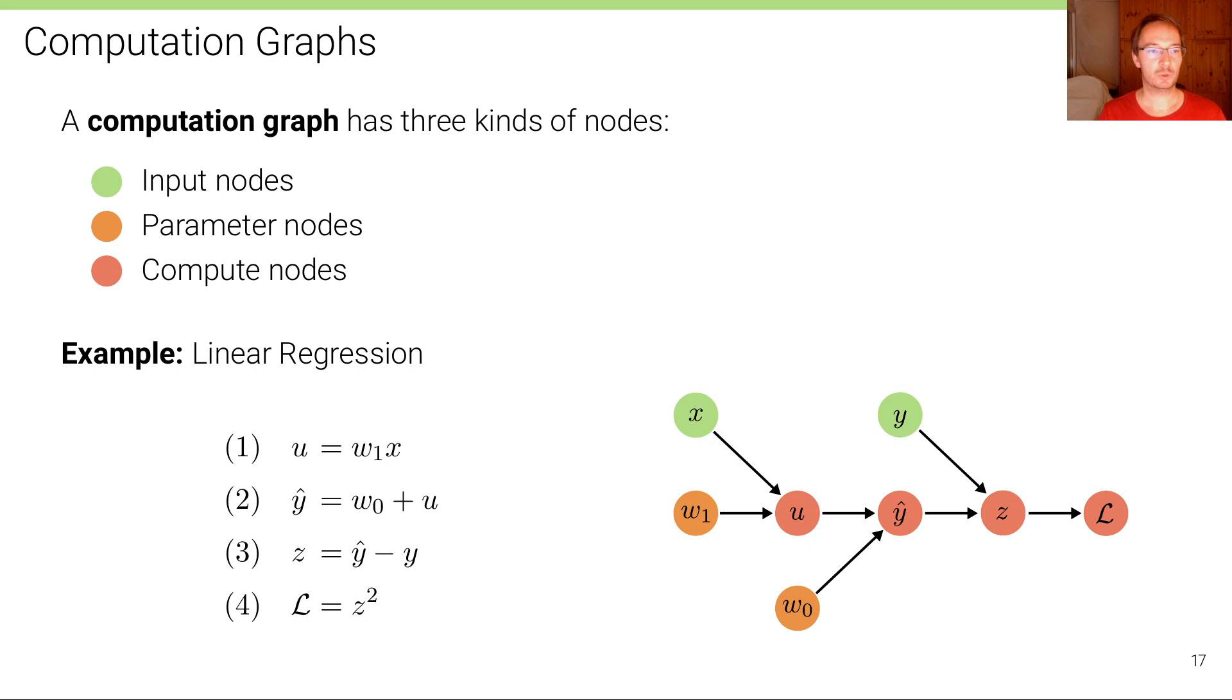Now let's look at what a computation graph is. A computation graph, as we will define it in this lecture, has three kinds of nodes: input nodes in green, parameter nodes in orange, and compute nodes in red. Also, the loss function is a compute node in our setting. The input nodes don't have parameters; they are the input of our learning problem. They are basically the dataset. This is where the dataset goes into the computation graph, for instance, we have the x and the y here.